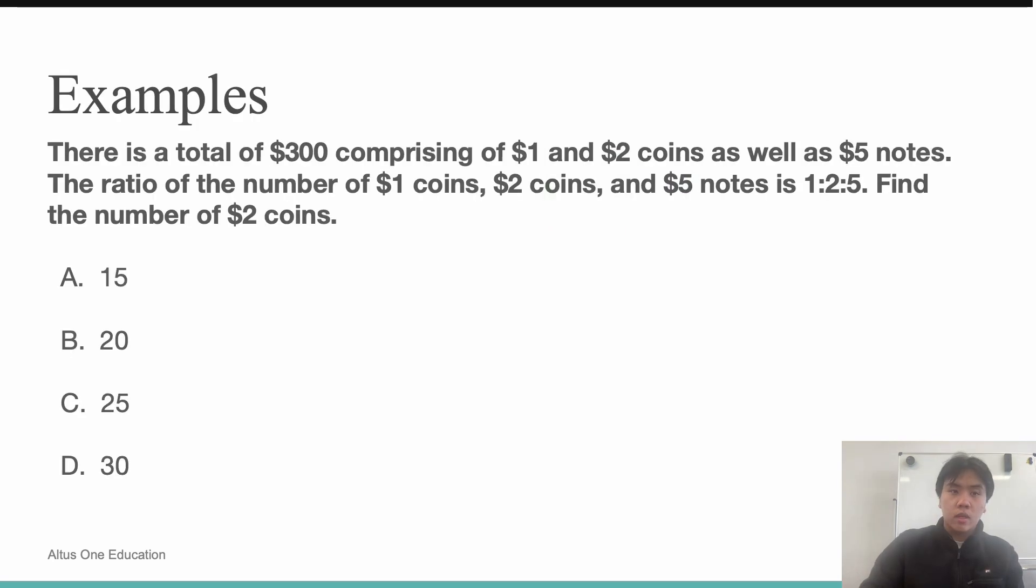Let's have a look at this practice question. There is a total of $300 comprising of $1 coins, $2 coins, and $5 notes. The ratio of the number of $1 coins to $2 coins to $5 notes is 1 to 2 to 5. So for every dollar coin, there are two $2 coins, and there are five $5 notes. This ratio is a simplified ratio of the total ratio, which adds up to $300. It's kind of like a mini ratio.